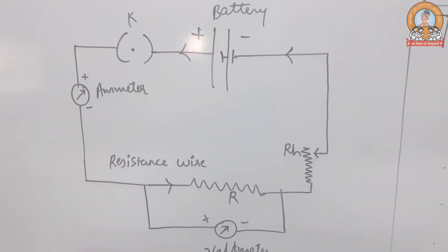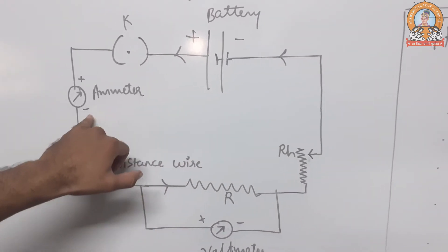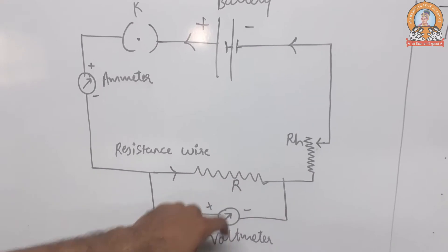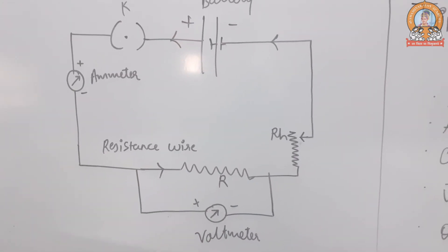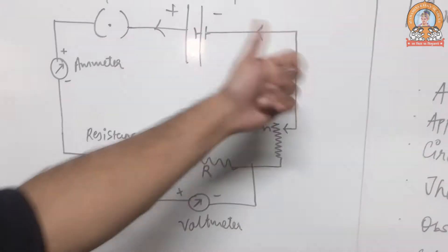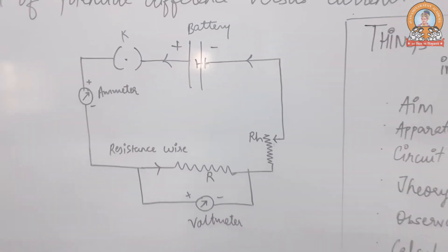This will be the circuit diagram. Battery will be connected to the ammeter, that will be connected to a resistance wire. Across the resistance wire there will be voltmeter, and the whole circuit will be connected to the rheostat and then back to the battery.